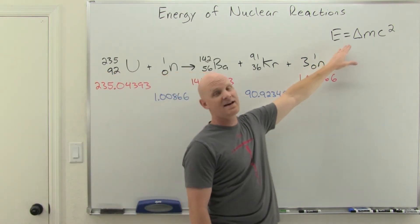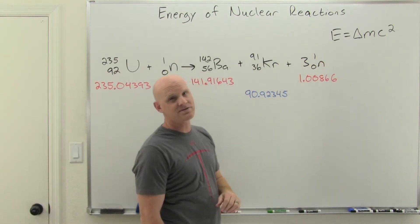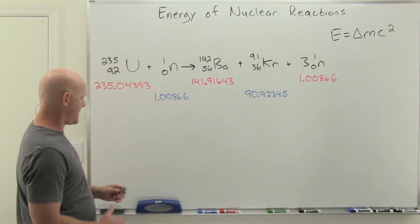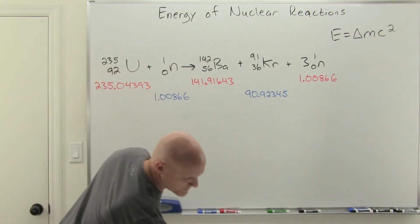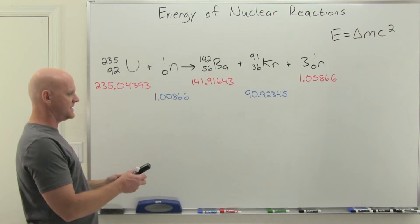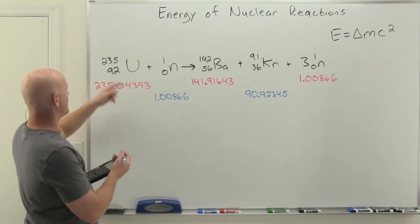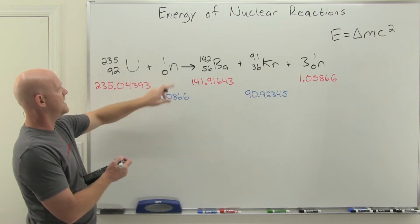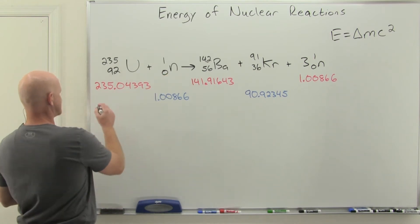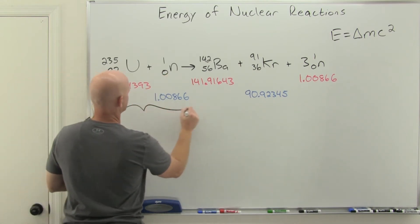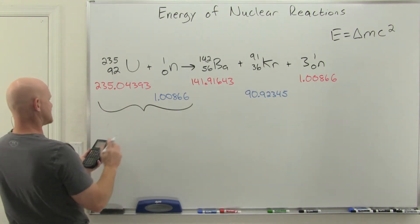If we start adding some things up—and I would whip out that calculator because you're going to need it—if we add up uranium-235 at 235.04393 and the neutron at 1.00866, we are going to get a total mass of the reactants of 236.05259 AMUs.